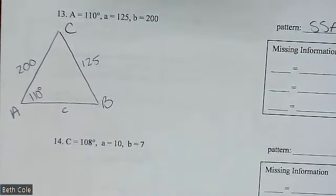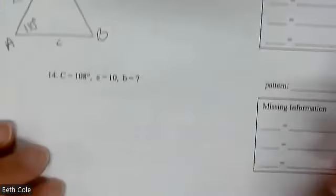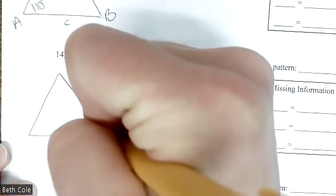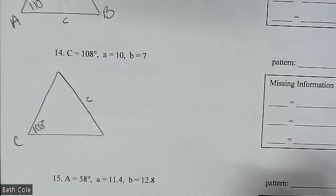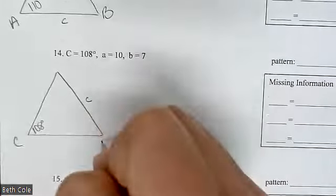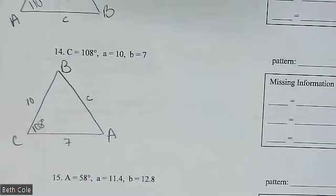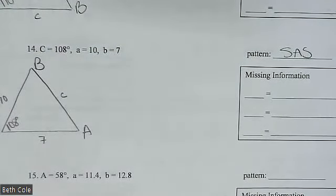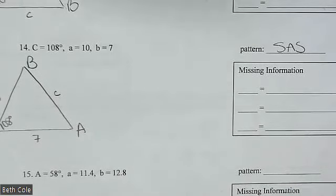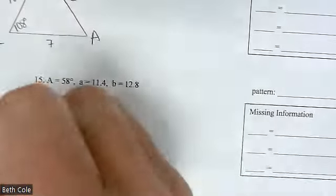Do I have to write 'theta is whatever'? Yes — that's the analysis, and that's what I'm giving you points for. Even if you don't do the problem or it comes out as no solution, you still get points for writing the analysis. For problem 14: 108 degrees goes at the bottom left — it's not always A, it's whichever angle you have. We don't have the side across from it. Sides of 10 and 7 go on the other vertices. The pattern is side-angle-side, which means Law of Cosines.